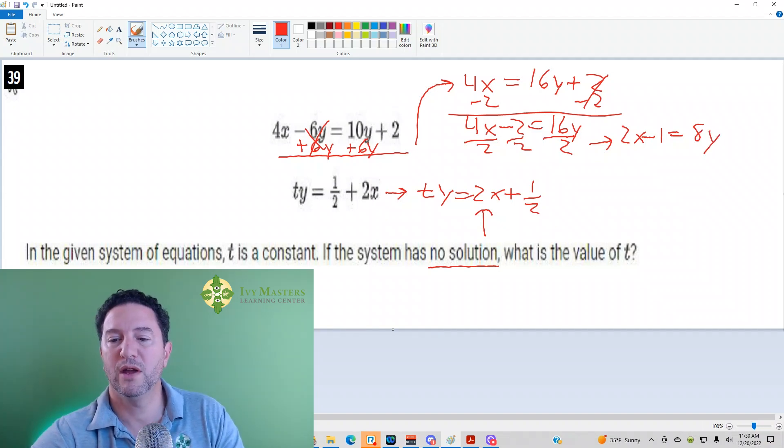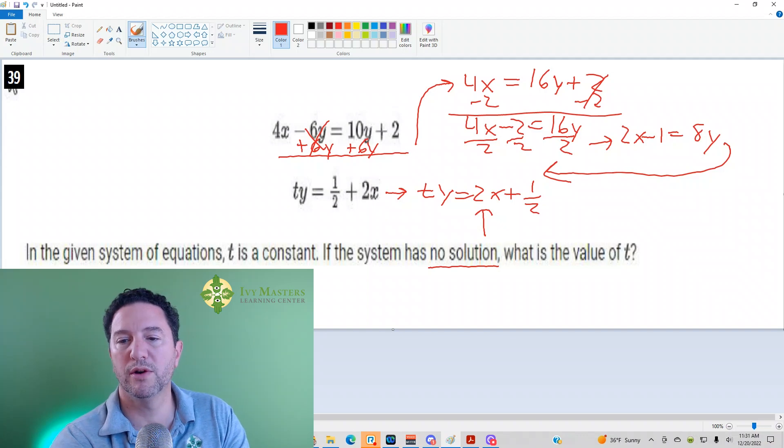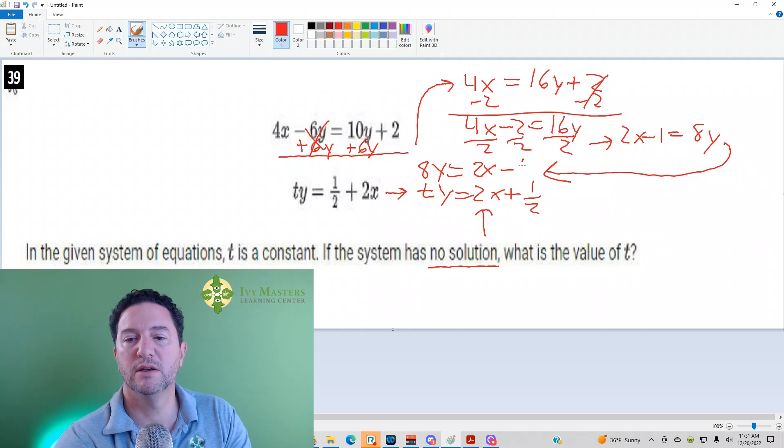So if your value of t—now I'm going to rewrite it down here just above this equation but in the same order—I could say 8y equals 2x minus 1.